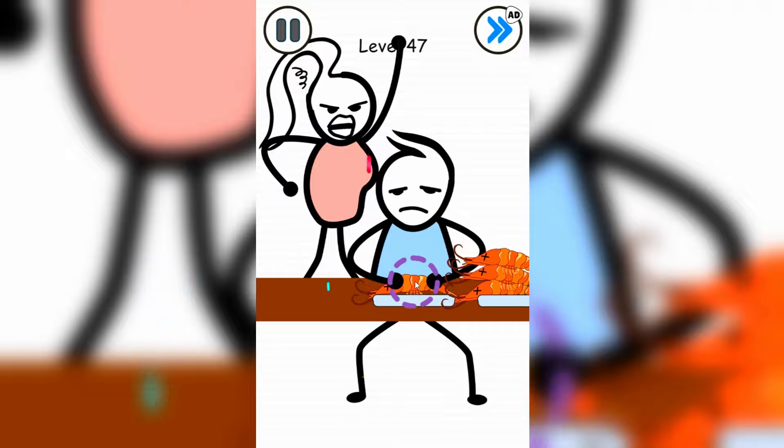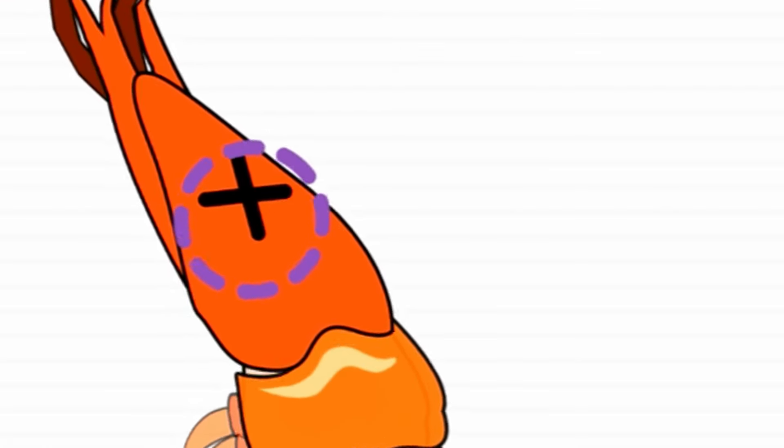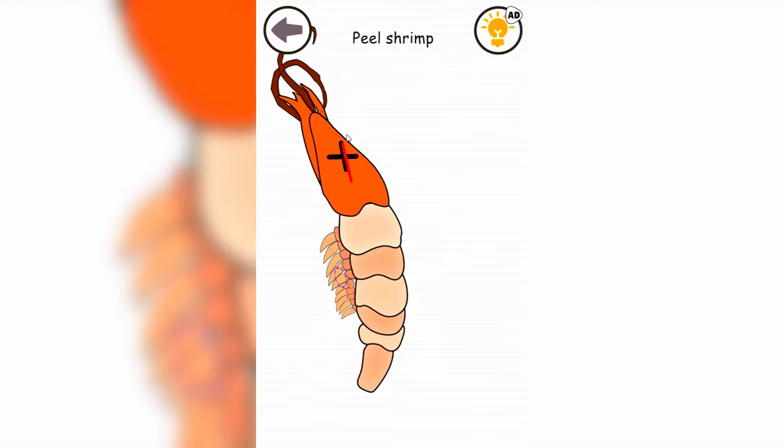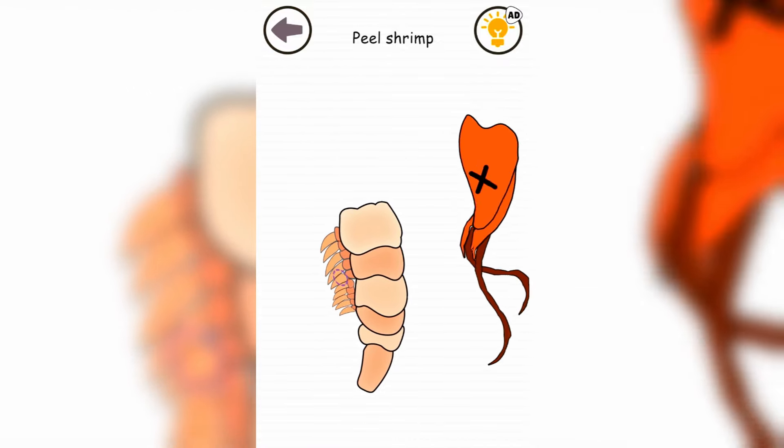Shrimps are very healthy and you gotta go and eat them. But the only way how you can eat them is by removing their shells. There you go! That's already one. And that is two. Remove the little arms and bon appetit!